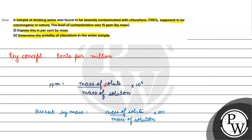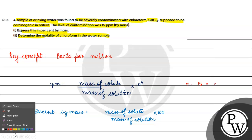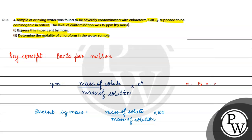If we extract the ratio of mass of solute to mass of solution, we can easily find percent by mass. The given value is 15 ppm. So 15 equals mass of solute by mass of solution — which we denote as capital A — multiplied by 10 to the power of 6.